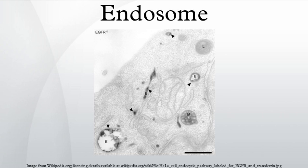In HeLa cells, endosomes are approximately 500 nanometers in diameter when fully mature. Endosomes provide an environment for material to be sorted before it reaches the degradative lysosome. For example, LDL is taken into the cell by binding to the LDL receptor at the cell surface. Upon reaching early endosomes, the LDL dissociates from the receptor, and the receptor can be recycled to the cell surface. The LDL remains in the endosome and is delivered to lysosomes for processing. LDL dissociates because of the slightly acidified environment of the early endosome, generated by a vacuolar membrane proton pump V-ATPase.